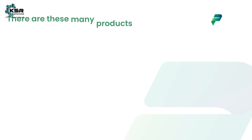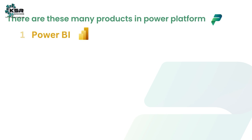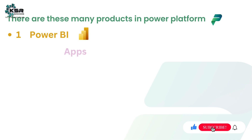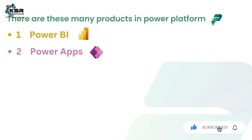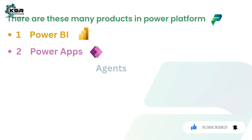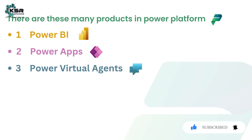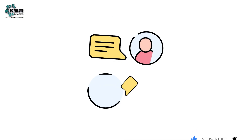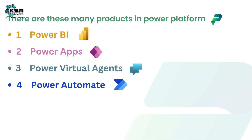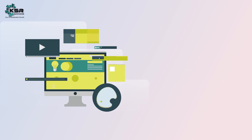There are several products in the Power Platform. The first one is Power BI, with which you can create reports. Then you have Power Apps, with which you can create various business applications. With Power Virtual Agents you can create chatbots. For automations you can use Power Automate, and Power Pages is used to create websites.